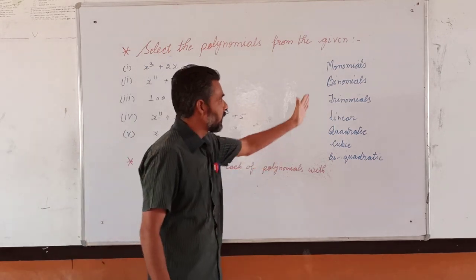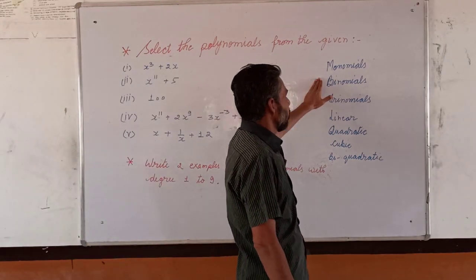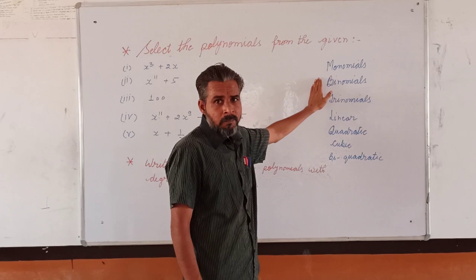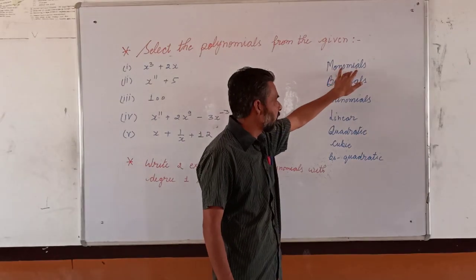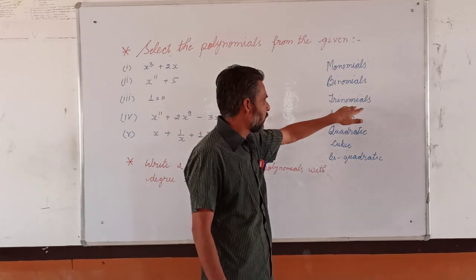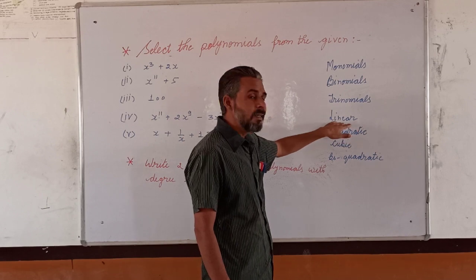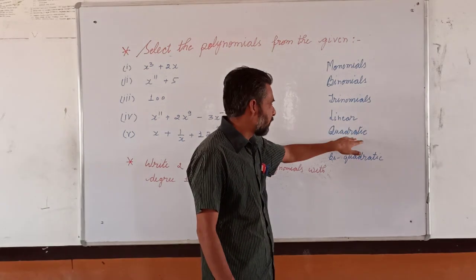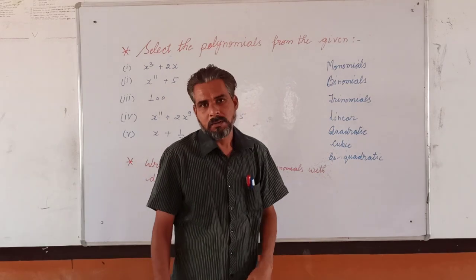The third question is this side. You are supposed to write minimum two examples of monomials, binomials, trinomials, linear polynomials, quadratic, cubic, and bi-quadratic.